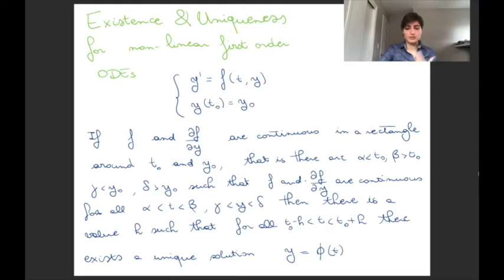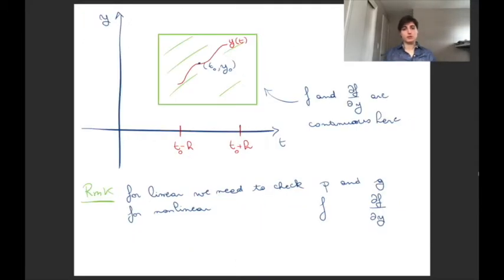So let's try to break this down a bit more. What you need is a rectangle around your point t0 in the t direction, in the y direction, in which both f and df/dy are continuous. If that is true, then you have a smaller section of t that goes from t0 minus h to t0 plus h in which you can find a solution that passes through your initial condition.